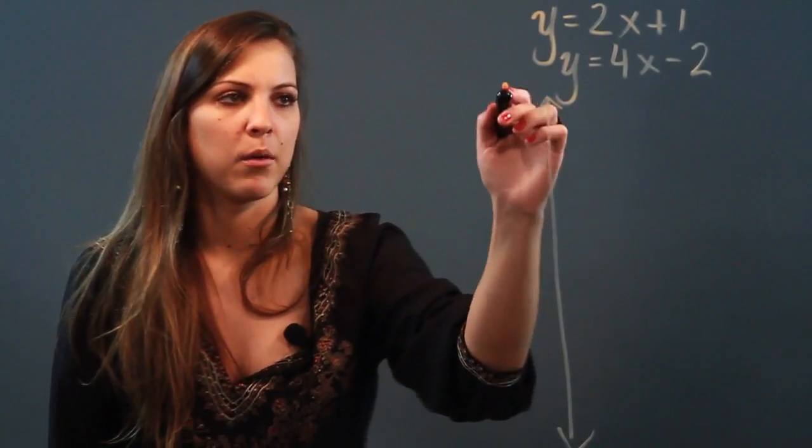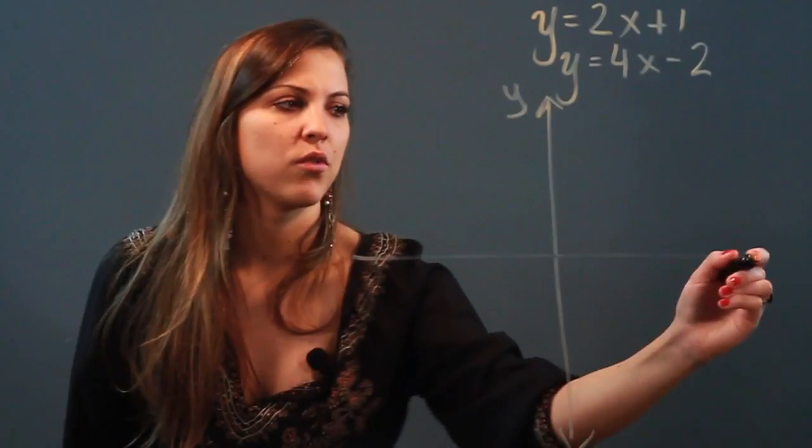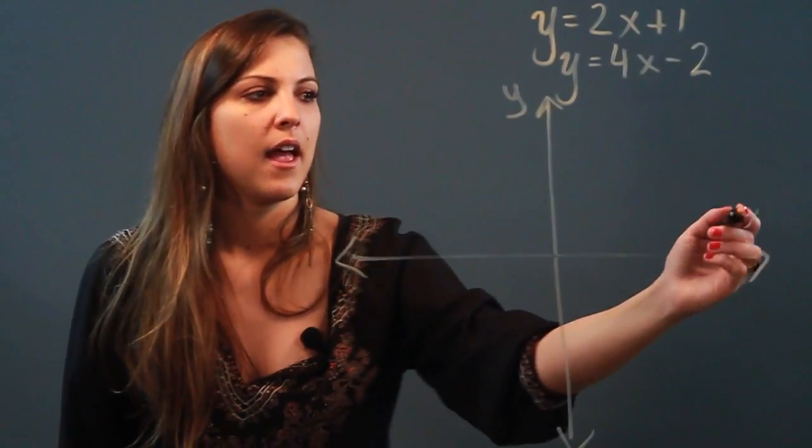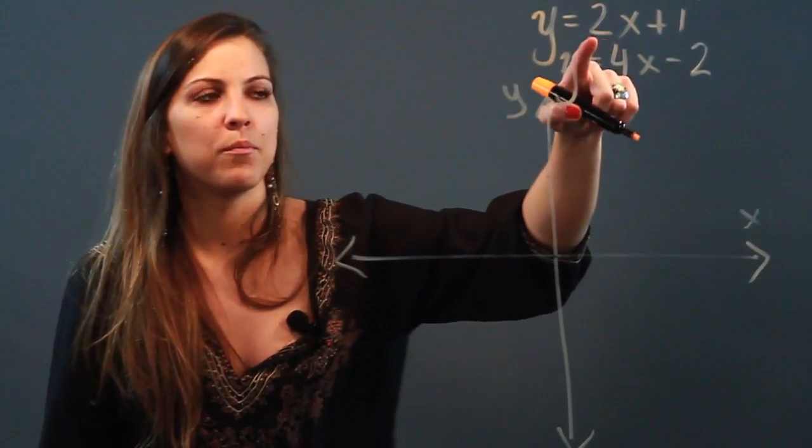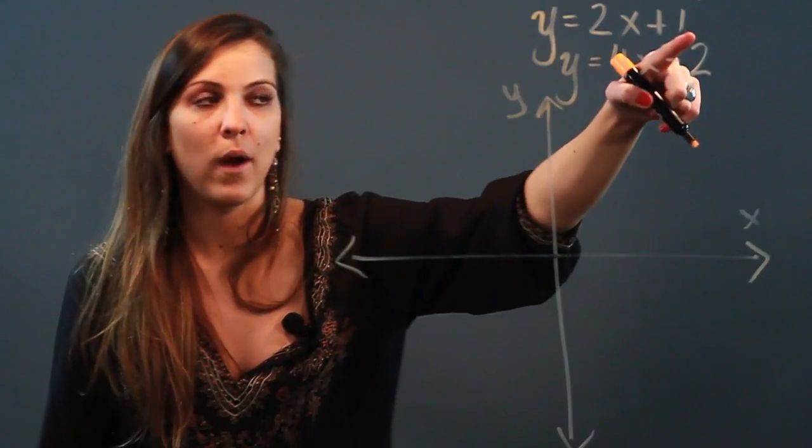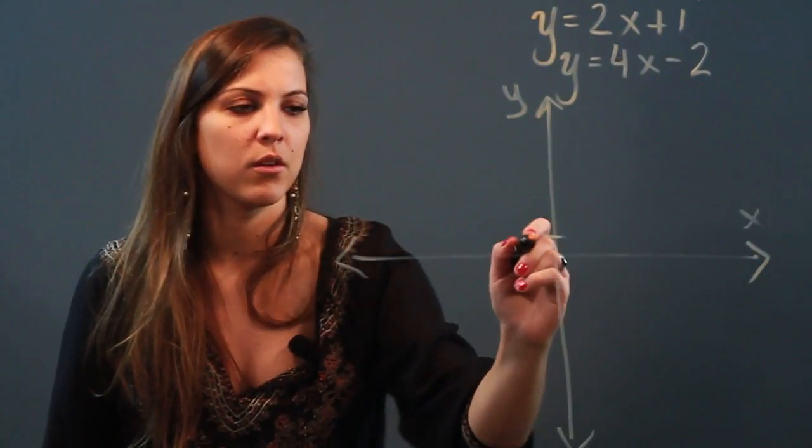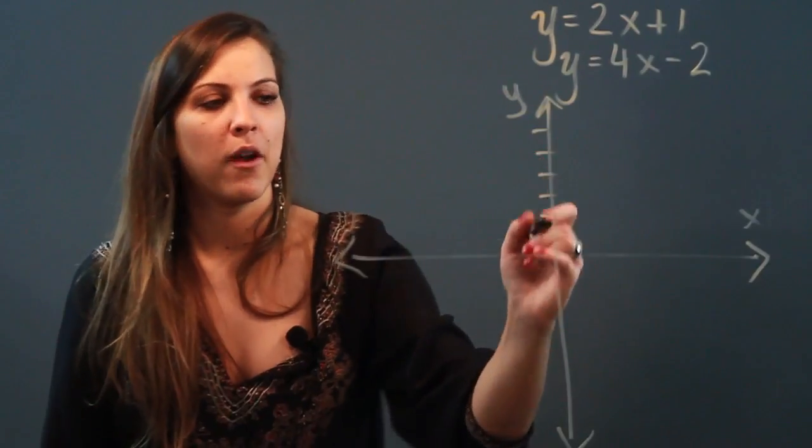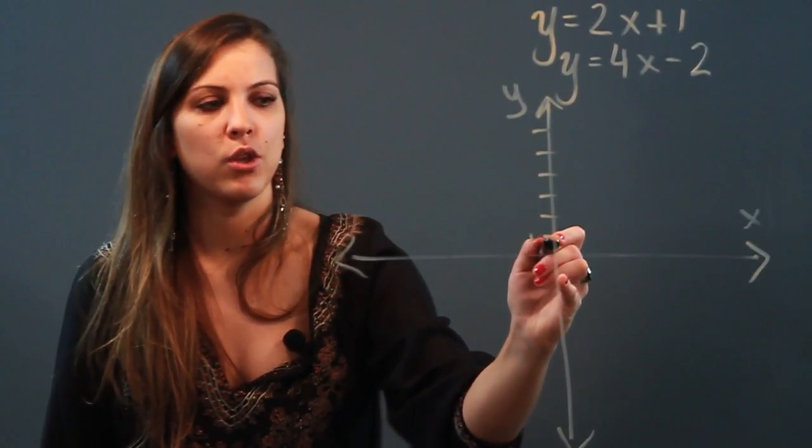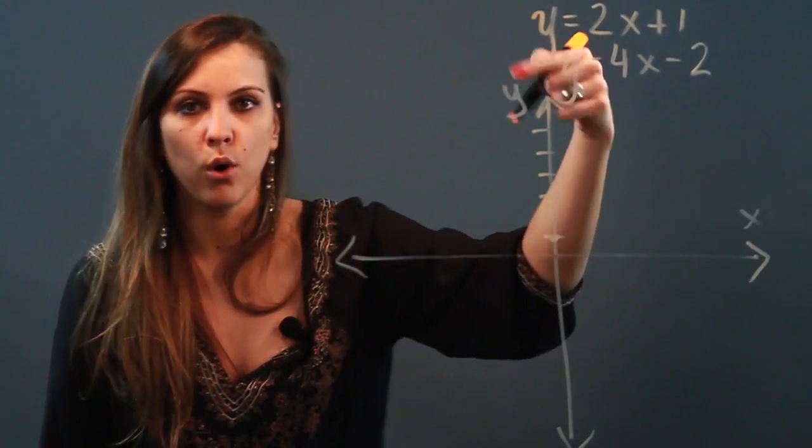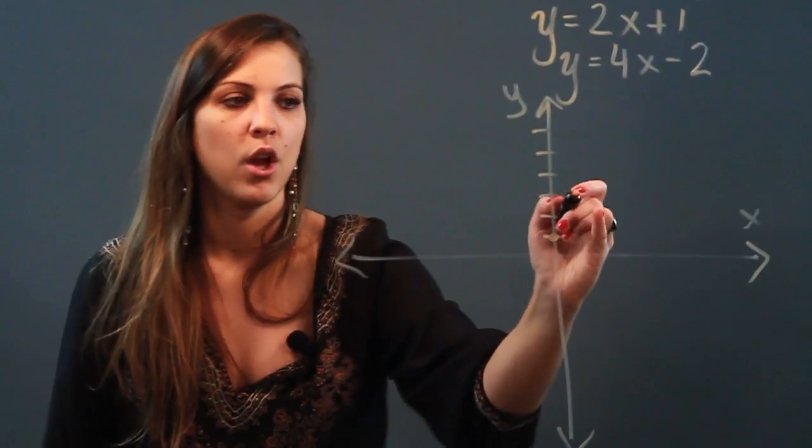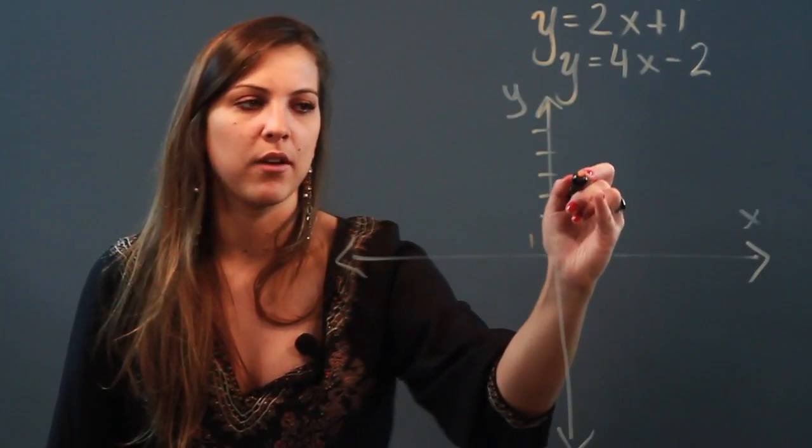So we're going to draw our y axis and we're going to draw our x axis, and we're going to graph our first line. To graph this line, you need to look at the y intercept first, which is 1. So I'm going to go to the number 1. And from this point, I'm going to use my slope, which is 2 over 1. So I'm going to rise 2, run 1 to get to the next point on my graph.